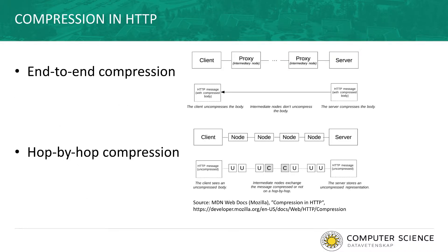HTTP compression enables web content to be compressed and thus leads to less data being transferred to the client. Particularly when HTTP is run over a secure connection, that is when HTTPS is used, HTTP compression leads to significantly reduced retrieval latency. HTTP compression may either take place on the server before the transmission to the client — so-called end-to-end compression — or on intermediate nodes — so-called hop-by-hop compression.